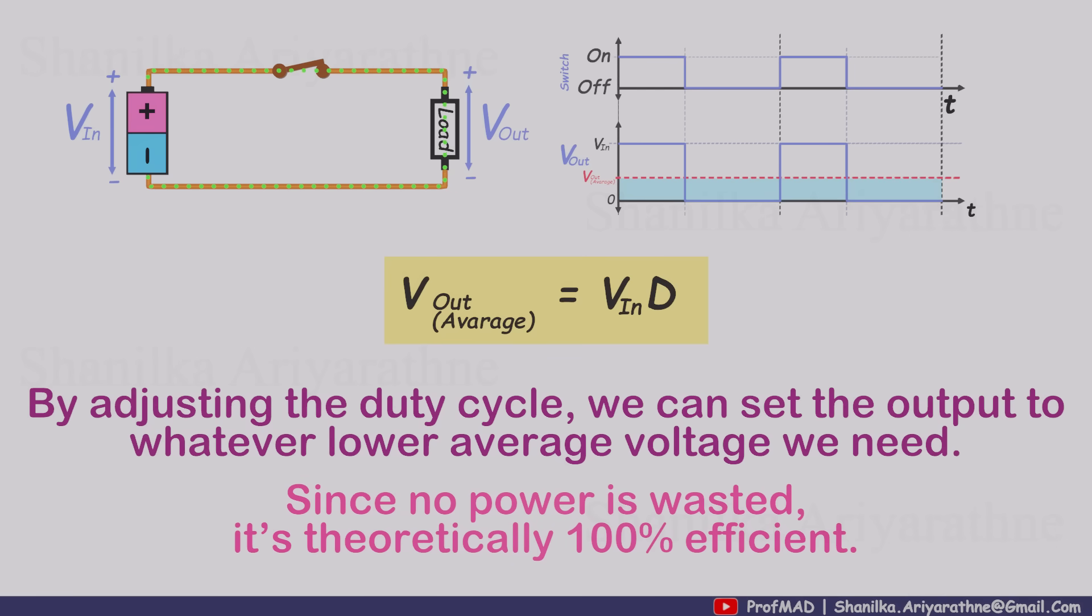And because we're not wasting power in resistors, all of the energy from the source goes into the load. In theory, that gives us 100% efficiency, with no conversion loss at all.